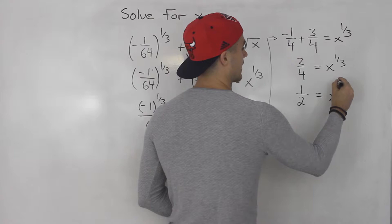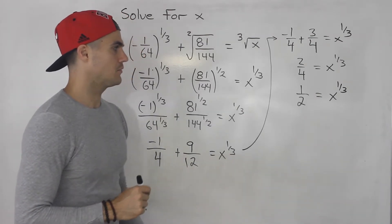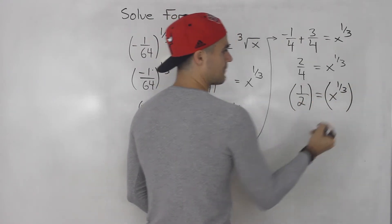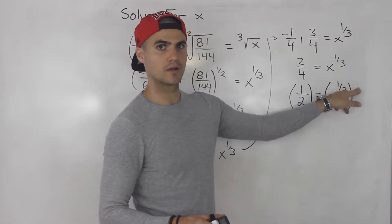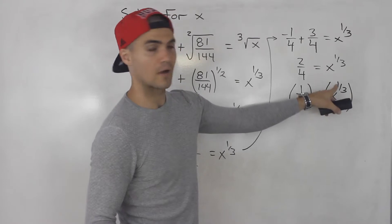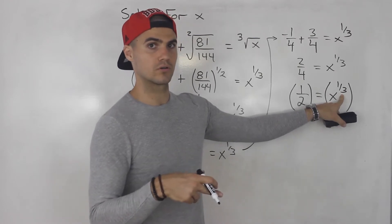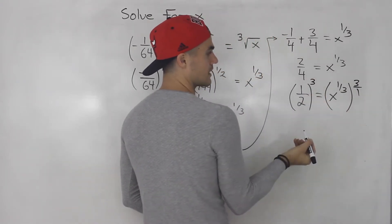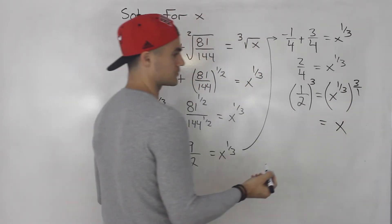So 1 over 2 is equal to x to the power of 1 over 3. The question is how do we isolate for x? What we can do is take both sides to the power of something where, when you multiply 1 over 3 by that exponent, it equals 1. You always use the reciprocal of that exponent. So if you have x to the power of a rational exponent and want to isolate for x, you take both sides to the power of the reciprocal. The reciprocal of 1 over 3 is 3. So 1 over 3 times 3 is just 1, leaving us with x to the power of 1, which is just x.